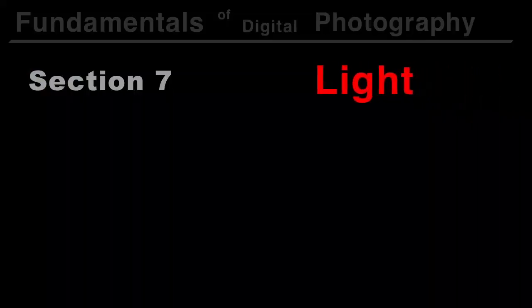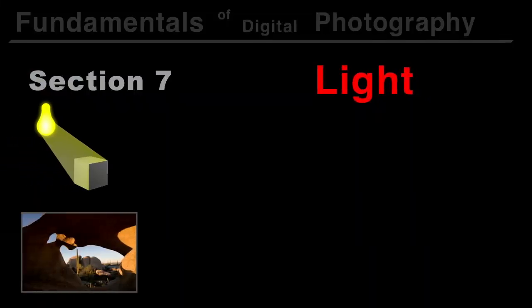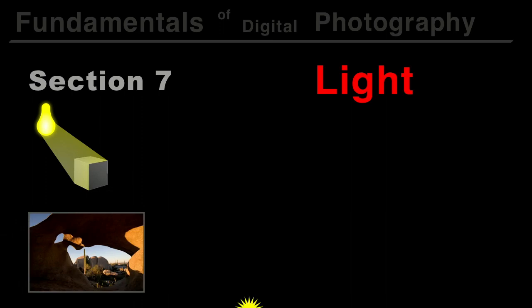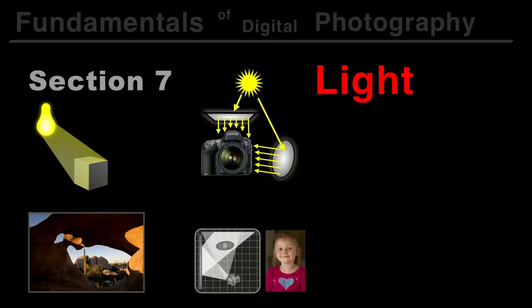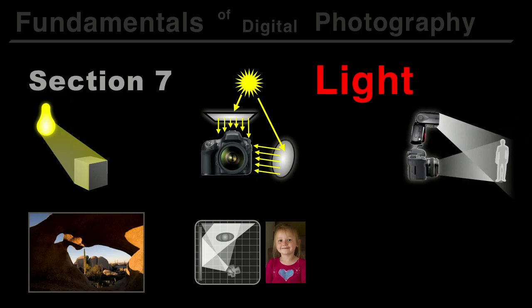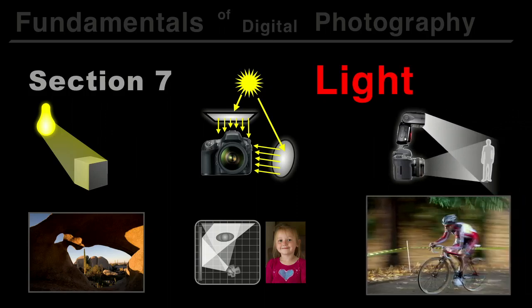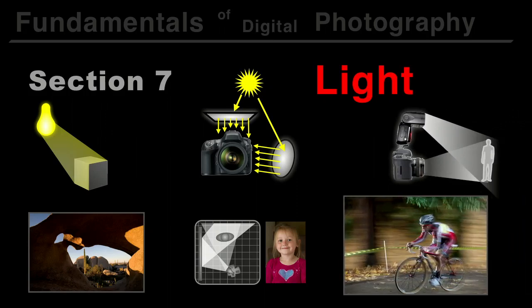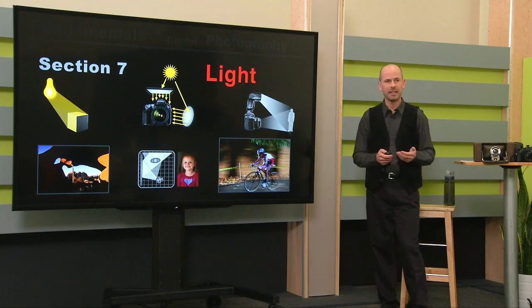Next up is light — obviously very important to photographers. We're going to talk about different types of light and how they affect the pictures you shoot. We're going to talk about modifying light with pretty simple devices; we're not going to get into a big studio setup. We're going to be using mostly on-camera flashes — your standard Nikon or Canon flashes — and what you can do with them to get interesting and nice results.